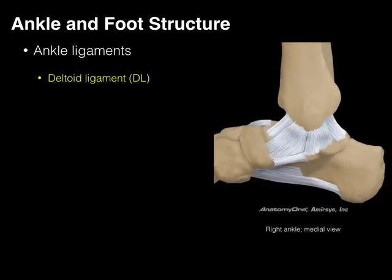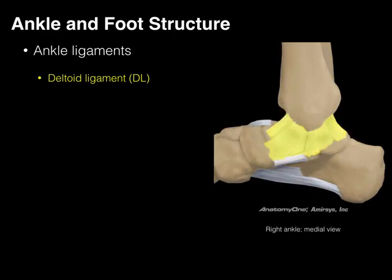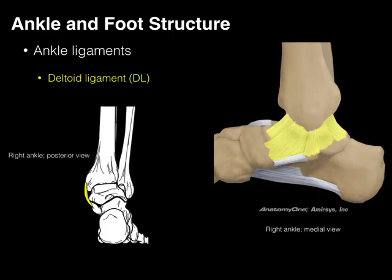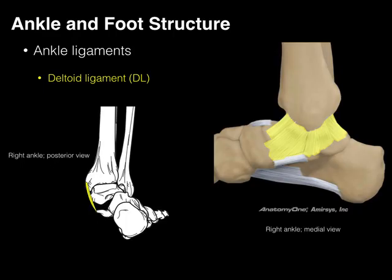Now we're going to look at the right ankle in a medial view and discuss the deltoid ligament. The deltoid ligament is comprised of a number of different smaller ligaments. It's the medial ankle ligament and gets its name because it forms a triangle shape, like the delta symbol. In a posterior view of the right ankle, it is going to limit or prevent hyper-eversion of the ankle joint.